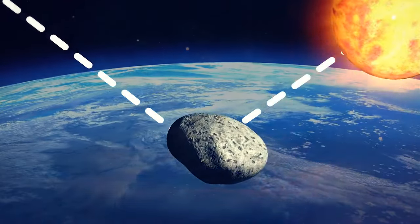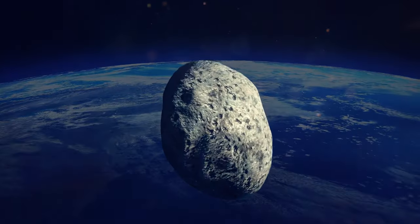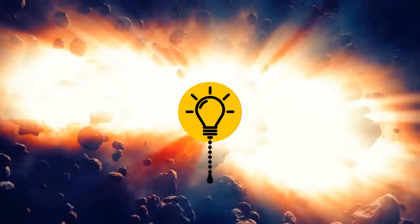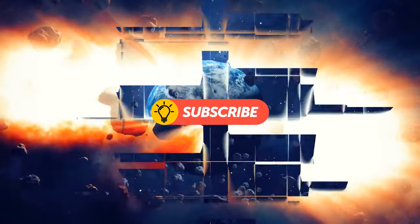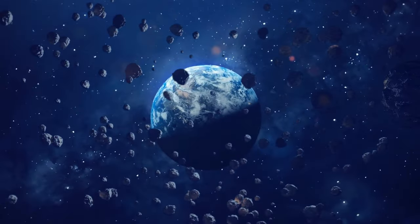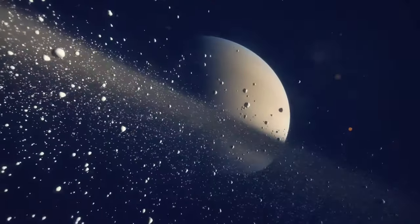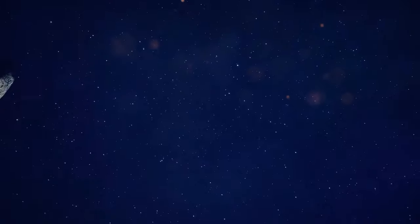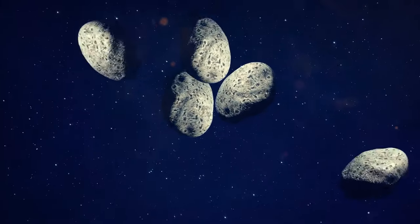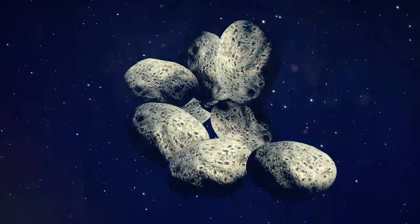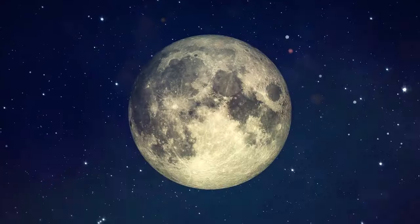It ripped out part of the Earth's crust and threw it into space. The Earth, in turn, absorbed part of the planet that rammed it. The debris from the collision circled the Earth for a long time. They were a kind of ring, almost like Saturn's. Debris in orbit collided and piled up around a common center of gravity. And that's how the Earth got the moon.